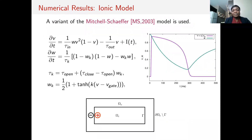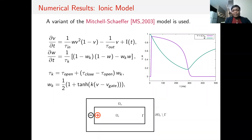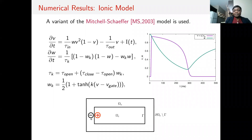Now I will show some numerical results, focusing on the time-stepping methods, as we are still working on the space discretization results. We choose the Mitchell-Schaeffer model for the ionic current. This shows the plot of the transmembrane potential V and the gating variable W against time for this model. We consider an idealized rectangular cell, and we initiate an action potential by injecting a negative current outside the cell and recovering it with a positive current inside the cell.